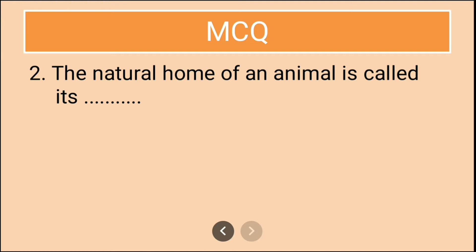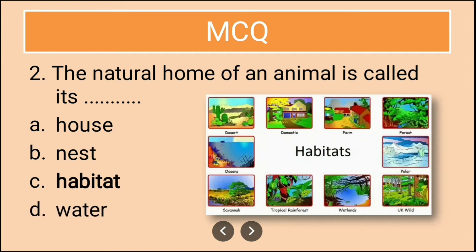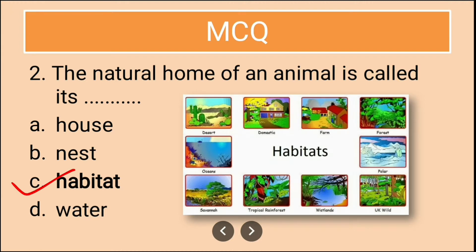The next question is: the natural home of an animal is called its dash. The options are house, nest, habitat, and water. The correct answer is habitat. For example, in a desert there are a lot of animals that live there — for example, the camel. Camels very nicely survive and live in a desert.